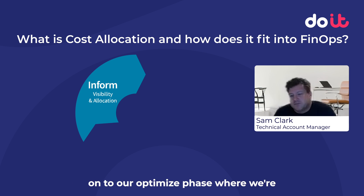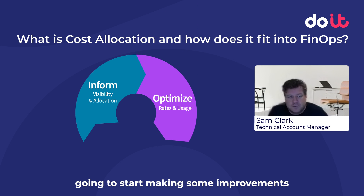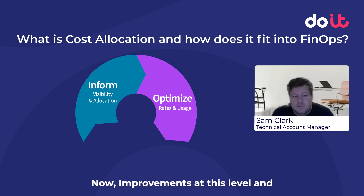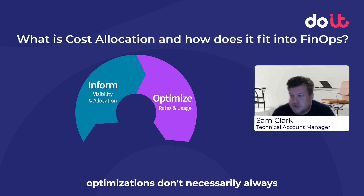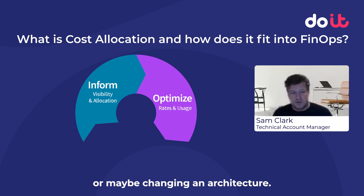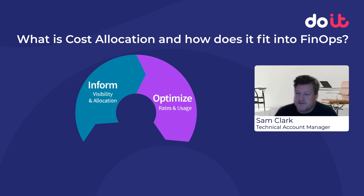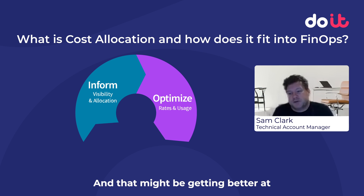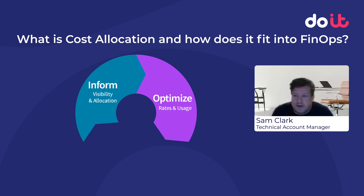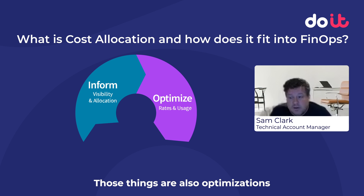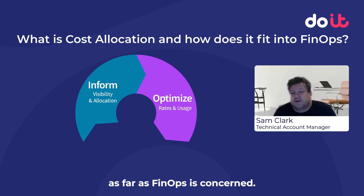Once we've got some information, we move on to our optimize phase, where we're going to start making some improvements and hopefully saving some money. Improvements and optimizations don't necessarily always mean the obvious stuff like changing from on-demand to committed usage or maybe changing an architecture. You can also include things about the FinOps and the cost allocation piece — like getting better at describing our usage or getting better at allocating costs to a different team. Those things are also optimizations as far as FinOps is concerned.